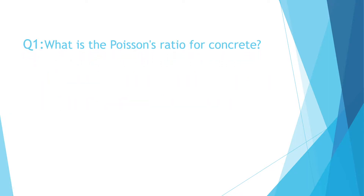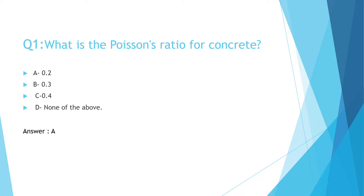What is Poisson's Ratio for Concrete? A. 0.2, B. 0.3, C. 0.4, D. None of the above. The correct answer is A: 0.2.